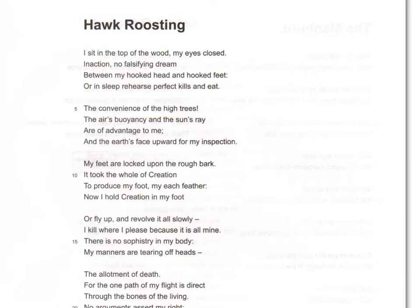The hawk in this poem is boastful, arrogant, and rightly so — it knows it is superior. It sits at the top of the tree, almost literally. A hawk roosting is a hawk who has done its feeding for the day and has gone back to its tree, its nest, and in Ted Hughes' eyes, reflecting on what it is, what it has done that day, and knowing it will do the same the next day. Nothing will really stop it. It is at the top of the food chain.